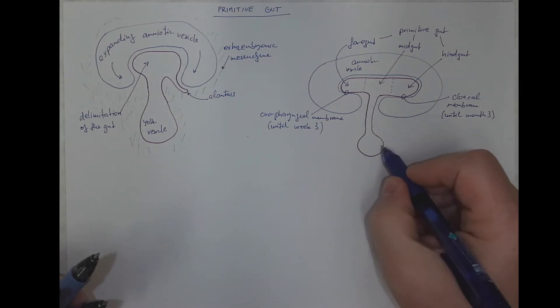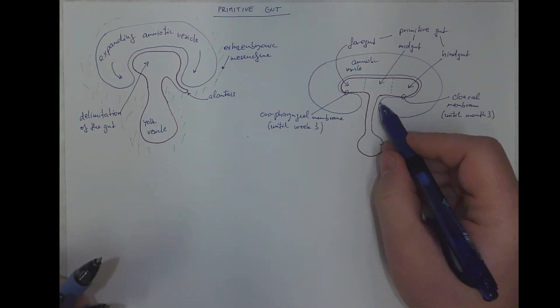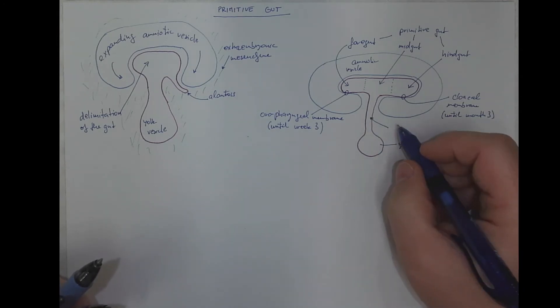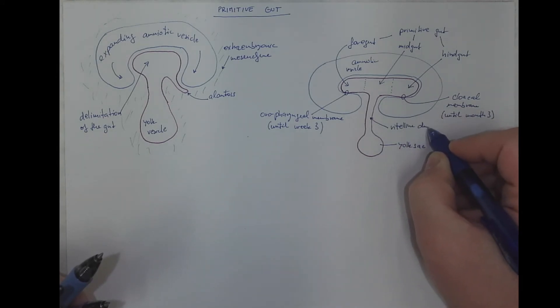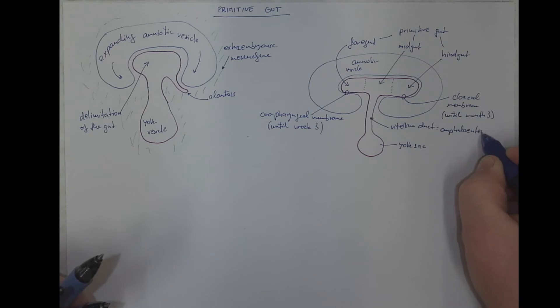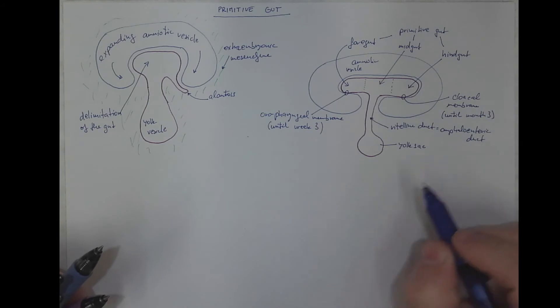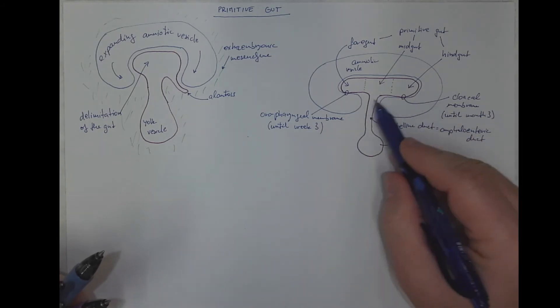This is the remnant of the yolk sac. And this connection between the primitive gut and the rest of the yolk sac is called a vitelline duct or the omphalomesenteric duct. Omphalos being just another word for the umbilicus and enteron meaning the intestine.